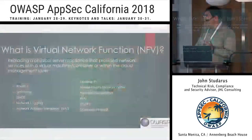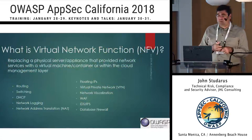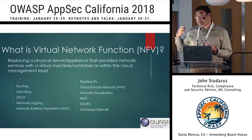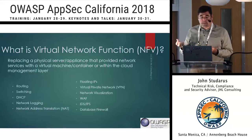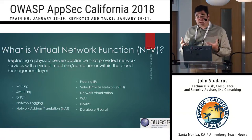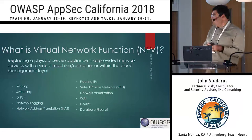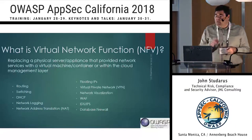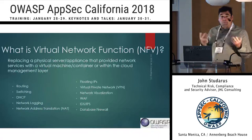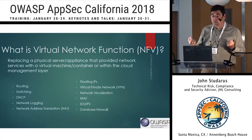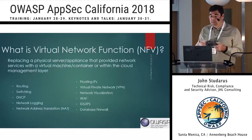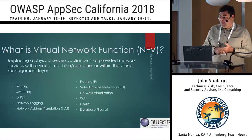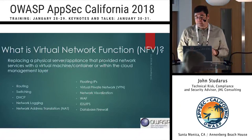What is a virtual network function? For those in the telco space, you're probably familiar with taking network functions and virtualizing them — taking something that used to be a physical appliance and putting it into the cloud management layer or into a VM. So whether an Amazon AMI or an OpenStack environment, you can take a web application firewall, an intelligent firewall, a database firewall, an IDS/IPS, or an anti-DDoS and put them into VM components available inside the cloud.